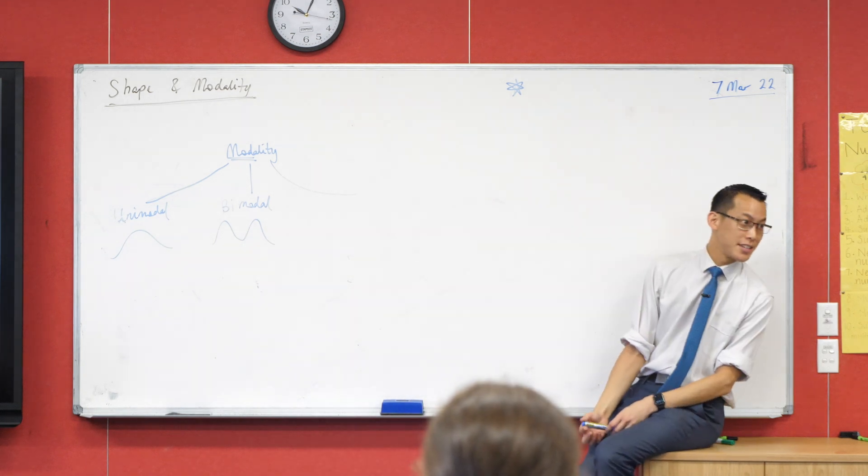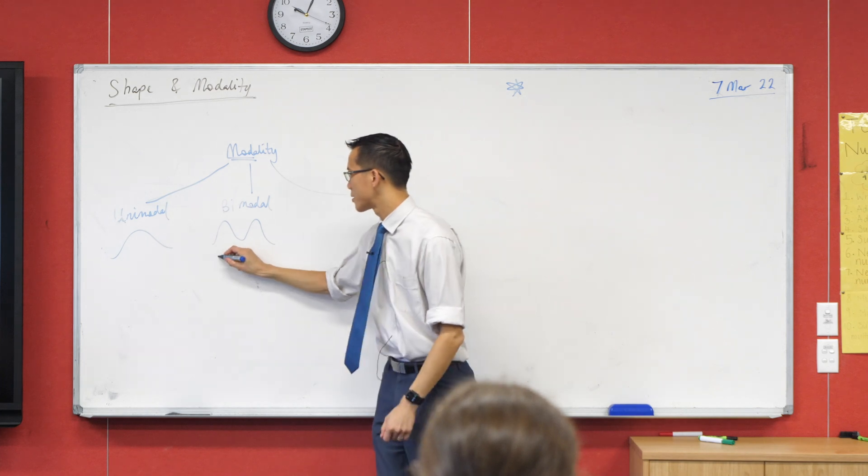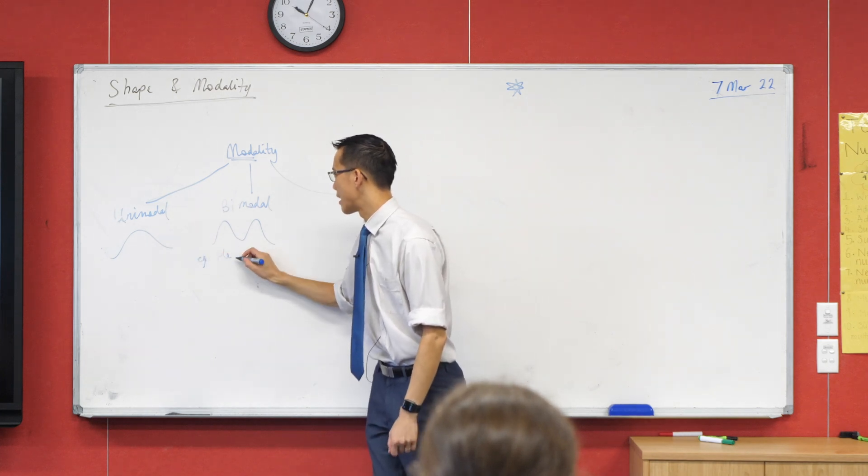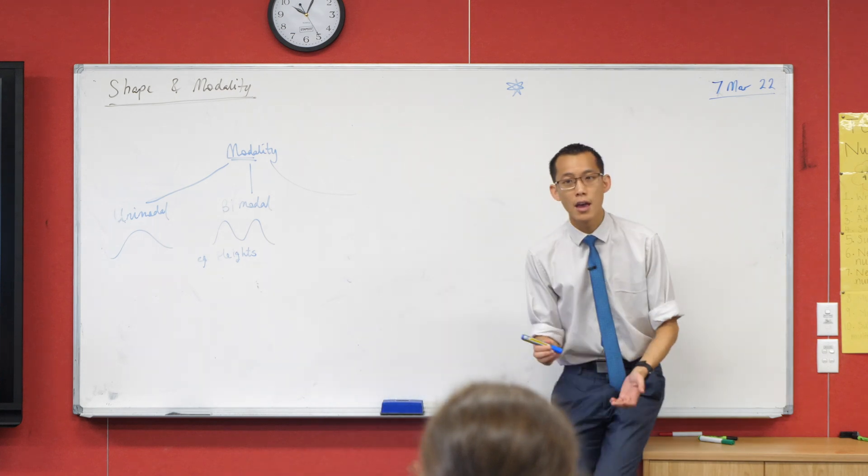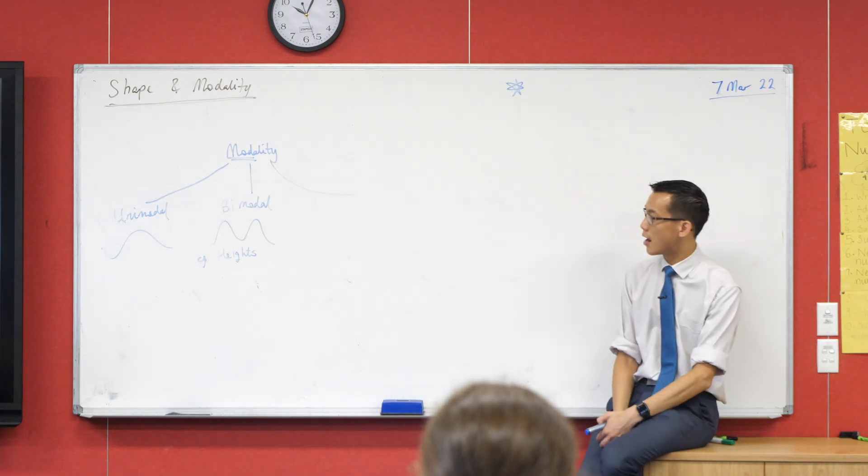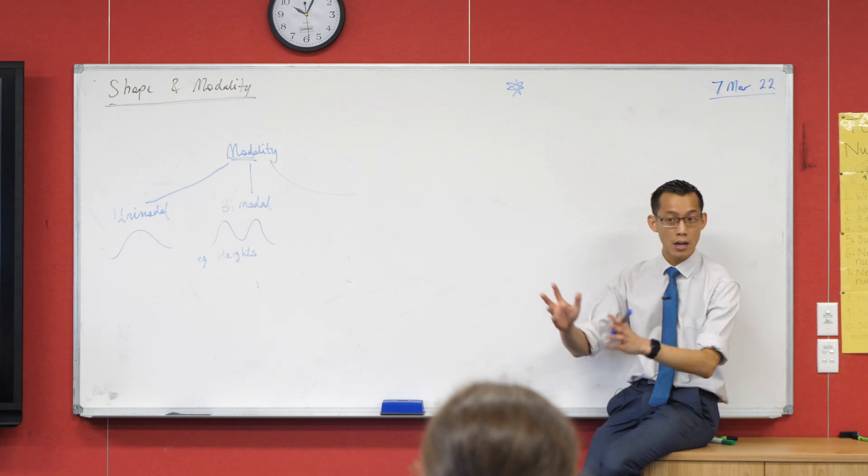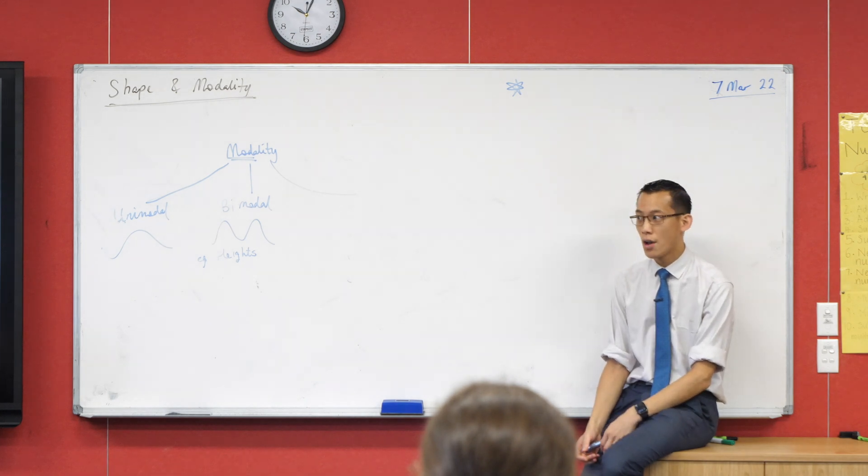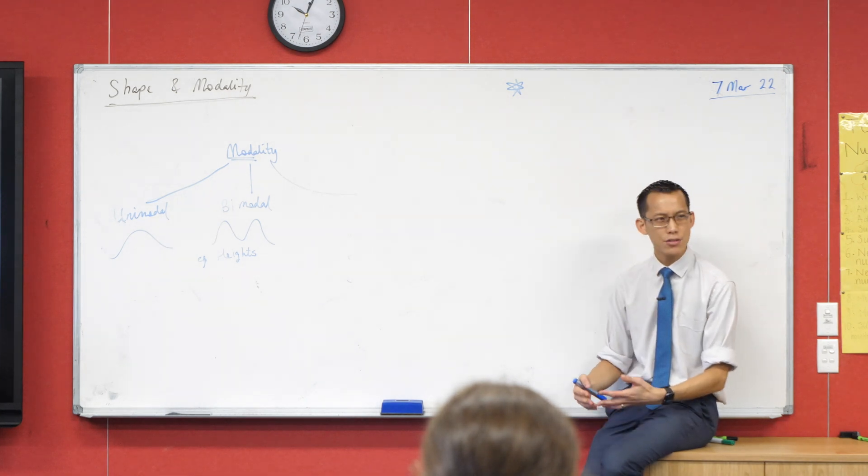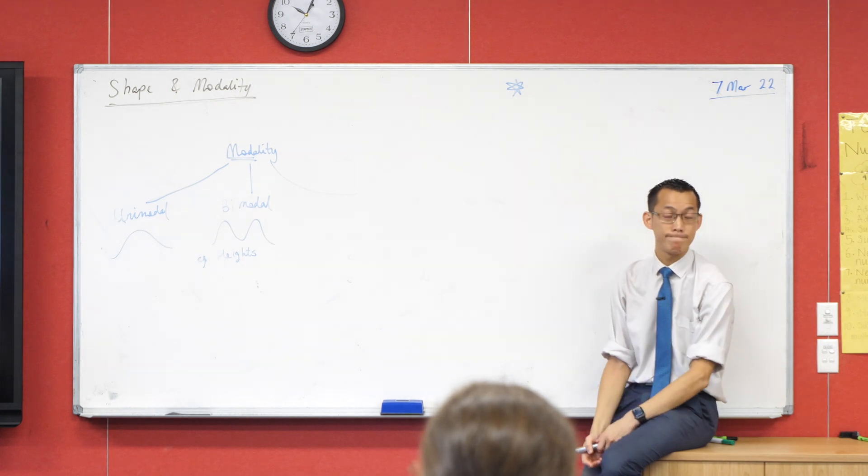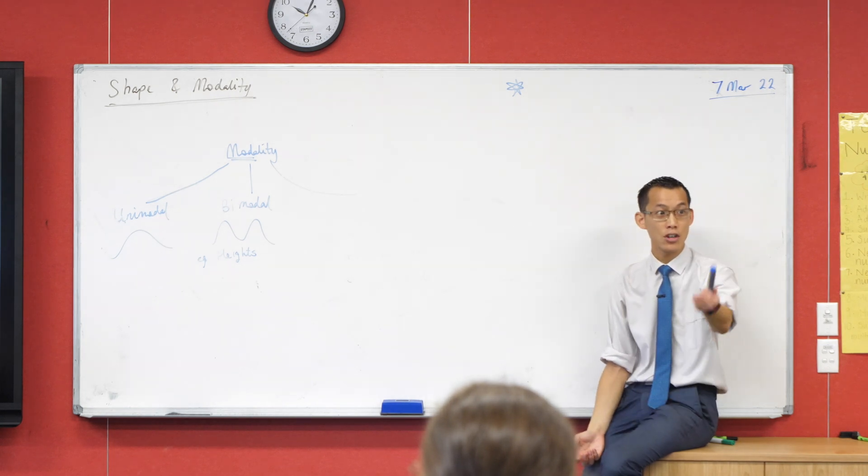Can someone give me a different example? So we just talked about heights. And by the way, it's super important that you mentioned these examples. They're an actual thing you have to learn in the syllabus. We've mentioned heights. Can someone think of another time or another place where you naturally end up getting two peaks in the data?